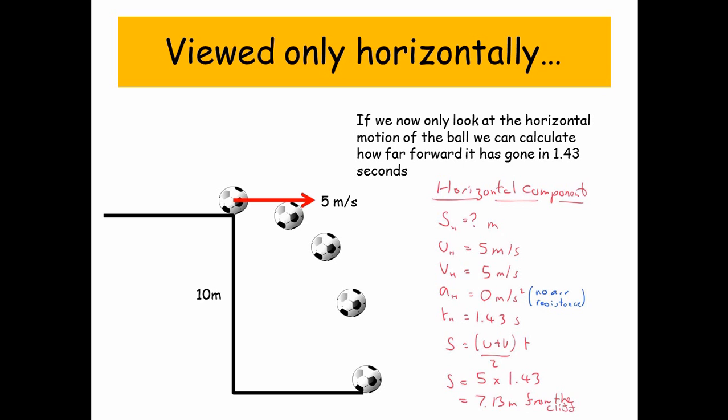Put the numbers in. And in fact, U and V are both 5, so 5 plus 5 divided by 2 just gives you 5 again. So we know that the distance traveled from the cliff face is going to be 5 times 1.43, which gives us 7.13 meters from the cliff.